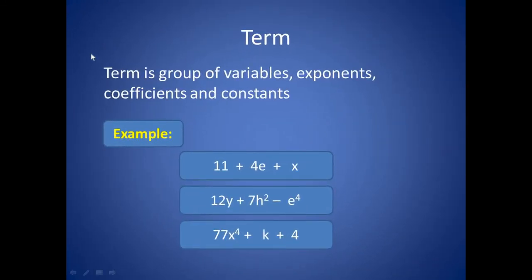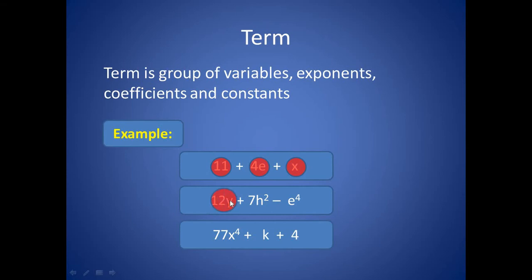Term — a term is a group of variables, exponents, coefficients and constants. For example, 4e is a term and x is a term. In this expression, 12y is a term, 7h to the power 2 is a term and e to the power 4 is a term. And in this expression, 77x to the power 4 is a term, k is a term and 4 is a term.